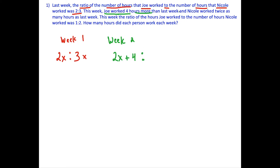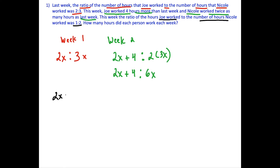We're also told that Nicole worked twice as many hours as last week. Nicole's hours is 3x, so we're going to double that: 2 times 3x. If we simplify this ratio, this is 2x plus 4 over 6x. And we're told that this week the ratio of hours Joe worked to Nicole worked was 1 to 2. So we set 2x plus 4 over 6x equal to 1 over 2.